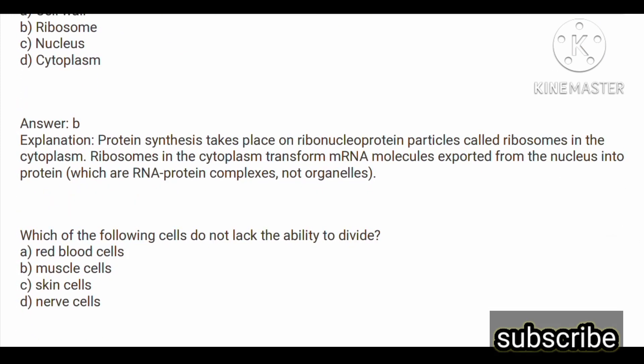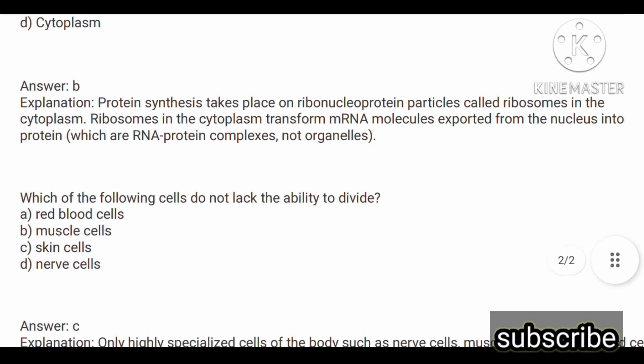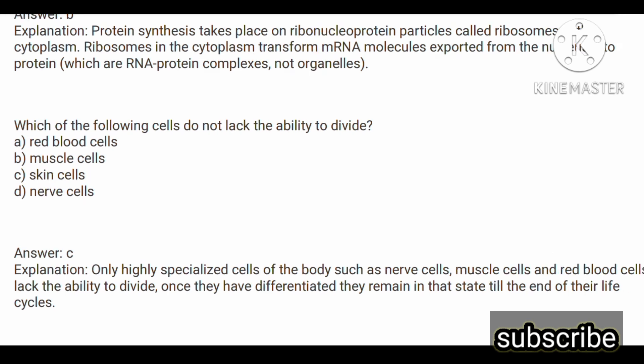Next question: which of the following cells does not lack the ability to divide? Options are: red blood cells, muscle cells, skin cells, and nerve cells. The answer is skin cells. Highly specialized cells of the body such as nerve cells, muscle cells, and red blood cells lack the ability to divide. Once they have differentiated, they remain in that state till the end of their life cycles.